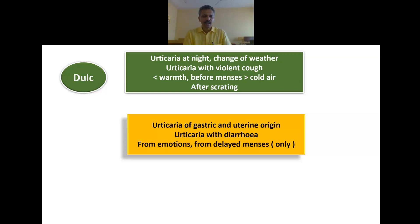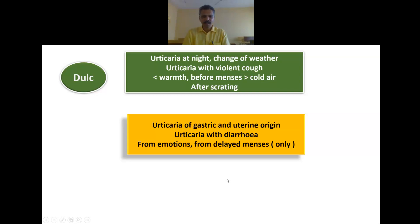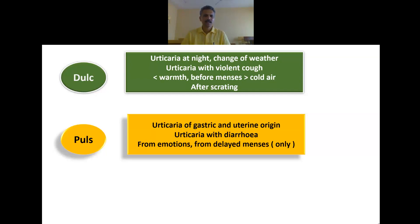Fifth: urticaria of gastric and uterine origin, urticaria with diarrhea, urticaria which comes from emotions, and urticaria from delayed menses. Think carefully. Pulsatilla is the correct answer. Pulsatilla is a remedy which has a lot of emotional involvement. Very good — the answer is Pulsatilla.